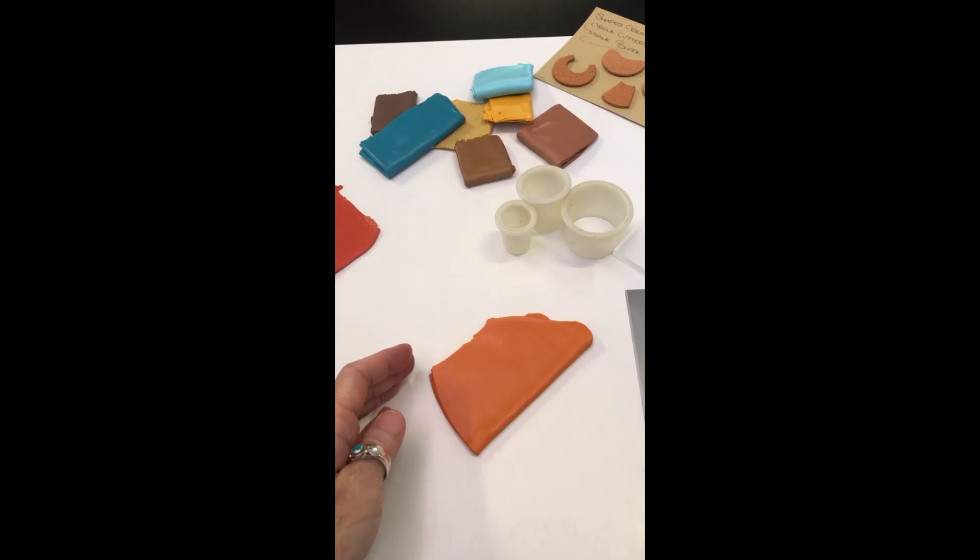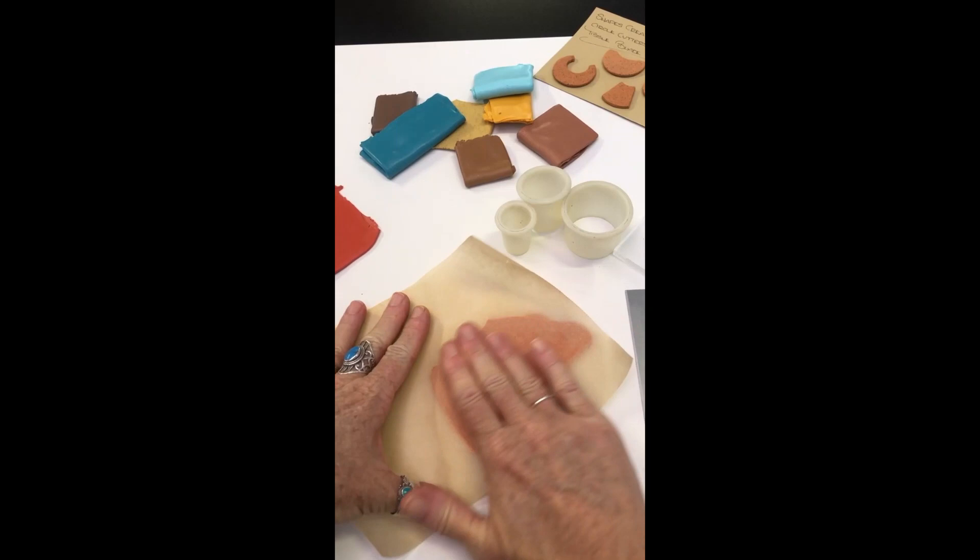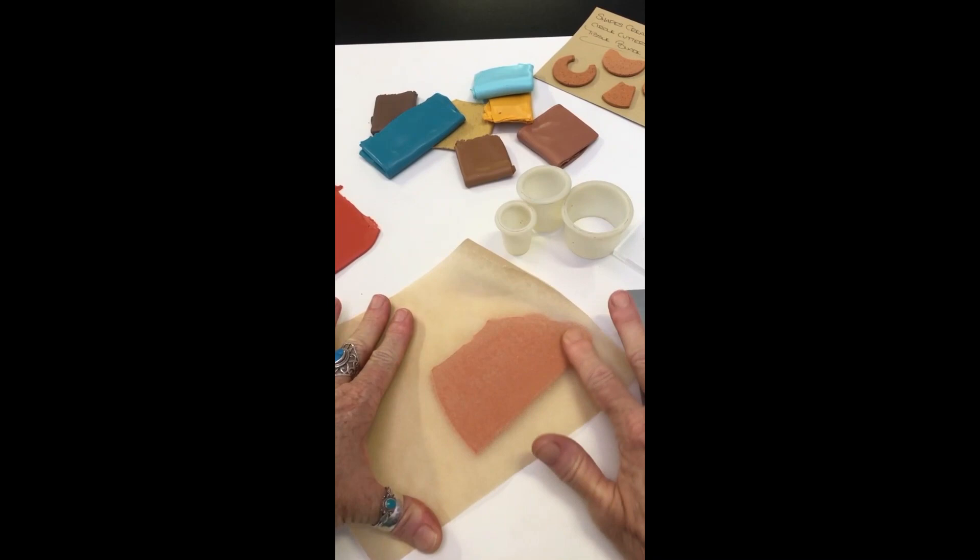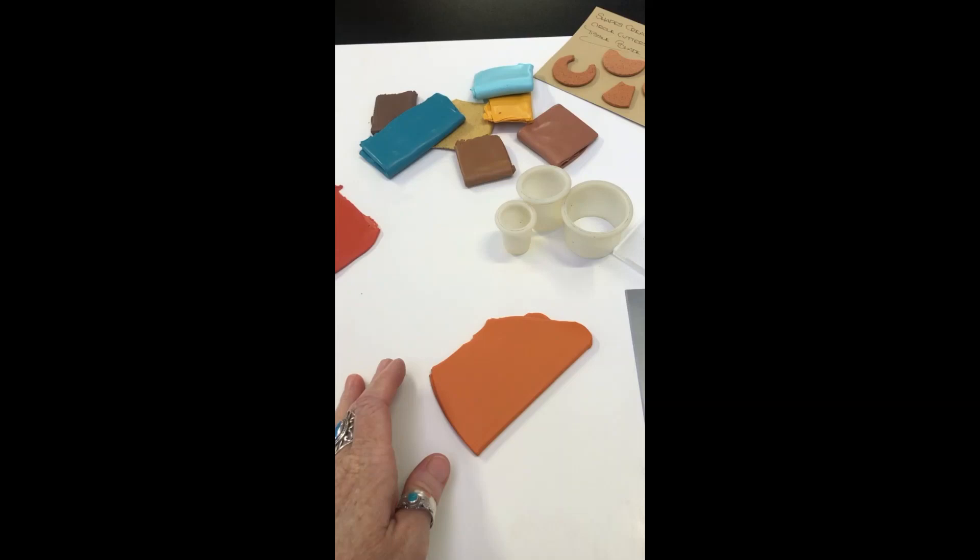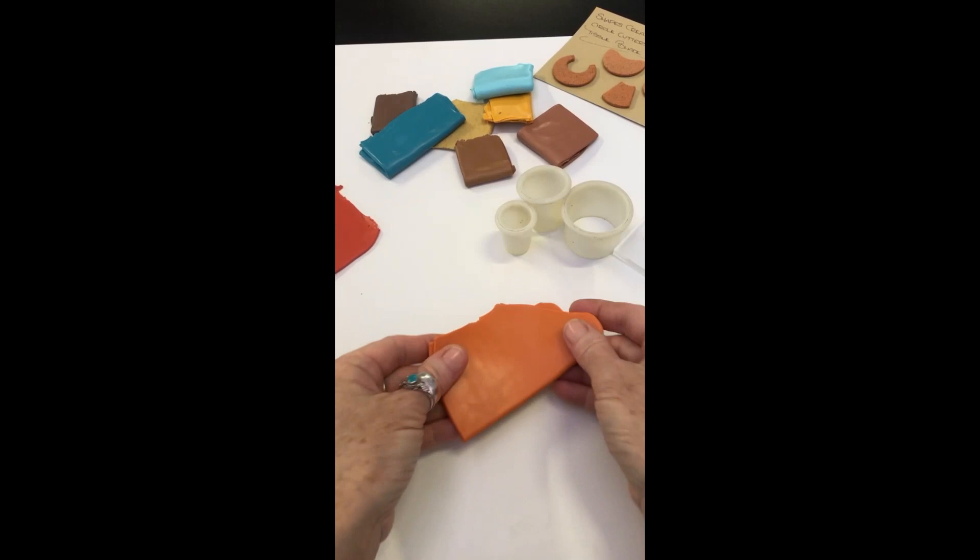And then I'm just going to fold it in half. You can use an acrylic rod to burnish the two pieces together. I'm just going to cover with some baking paper and I'm simply going to burnish over. So this will adhere my two pieces of clay together nicely. So just remove from the workspace and you can see that I have no air bubbles in there and my clay is well adhered.